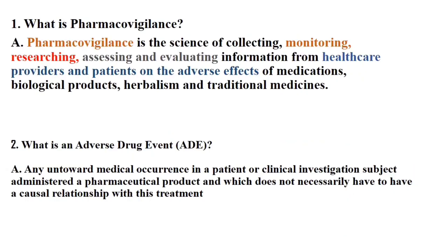The first basic question: what is pharmacovigilance? Pharmacovigilance is the science of collecting, monitoring, researching, assessing, and evaluating information from healthcare providers and patients on the adverse effects of medications, biological products, herbalism, and traditional medicines. This is the basic definition you need to remember.